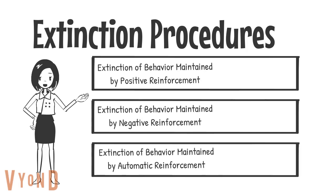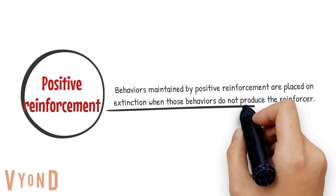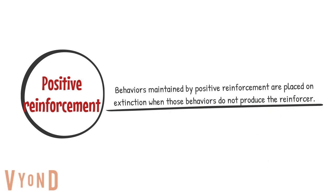There are three types of extinction procedures. The first is extinction of behavior maintained by positive reinforcement — when those behaviors no longer produce the reinforcer such as attention or access to tangibles or activities. Extinction for attention means they do not get attention in response to those behaviors — tantrums, aggression, etc. Extinction for access means they do not get access to the item or activity in response to those behaviors.